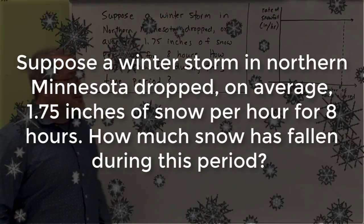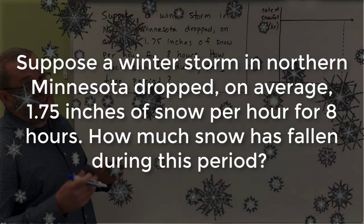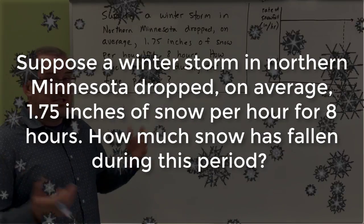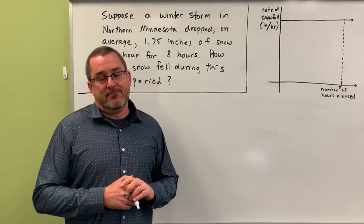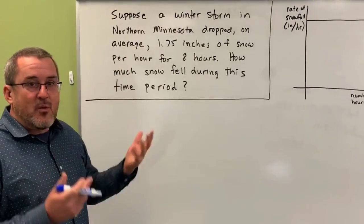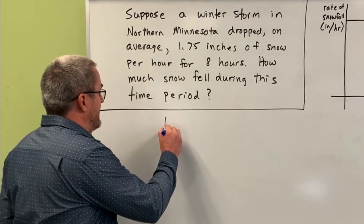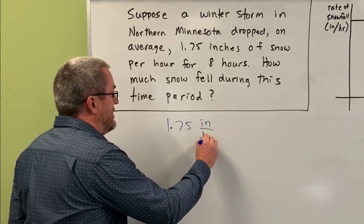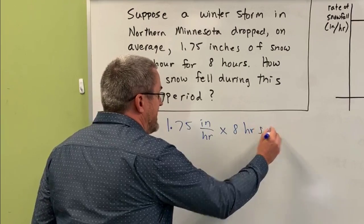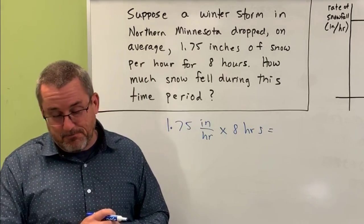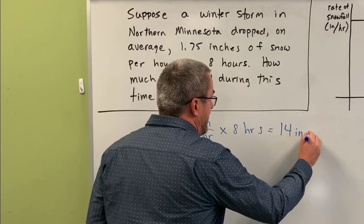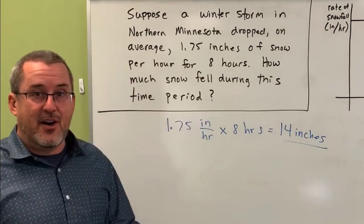Here's the problem. Suppose a winter storm in northern Minnesota dropped on average 1.75 inches of snow per hour for eight hours. How much snow has fallen during the storm? This is a fairly simple question: if we're seeing 1.75 inches of snow per hour for eight hours, we multiply those together to get the total amount of snow — 14 inches of snow has fallen during the storm.